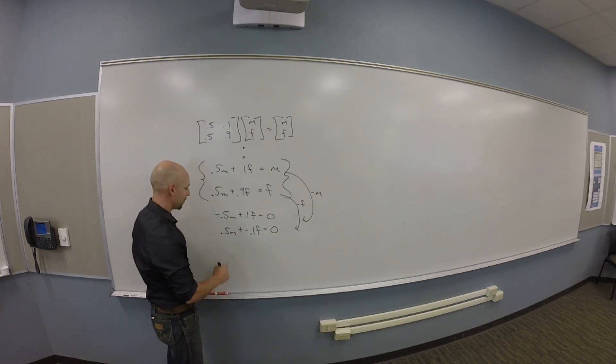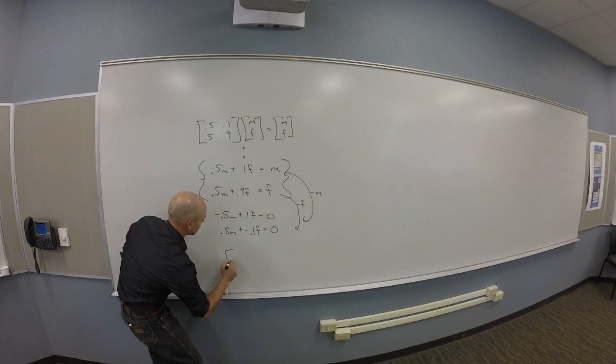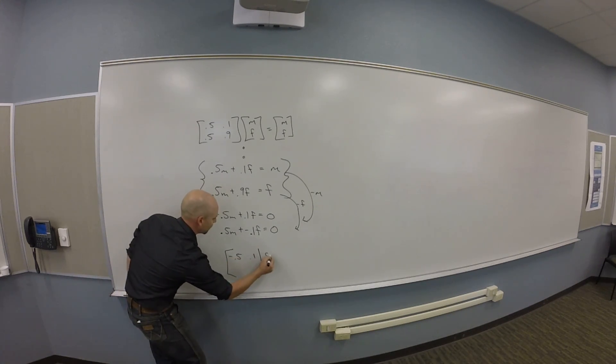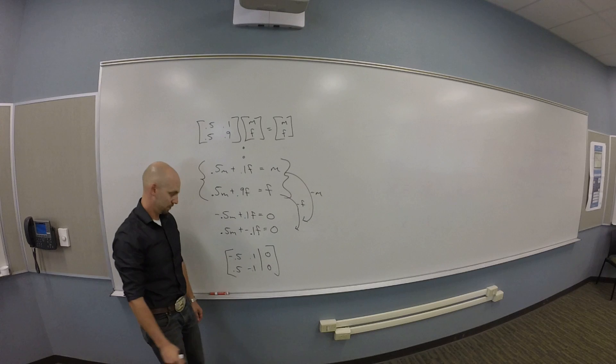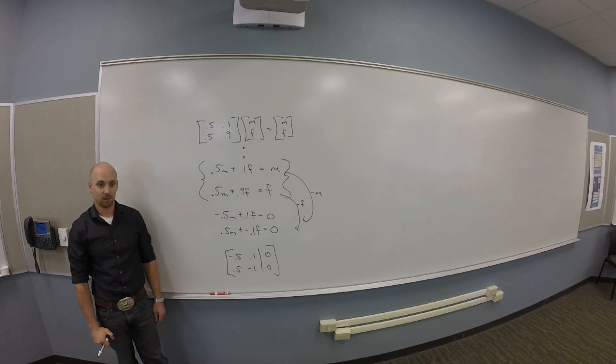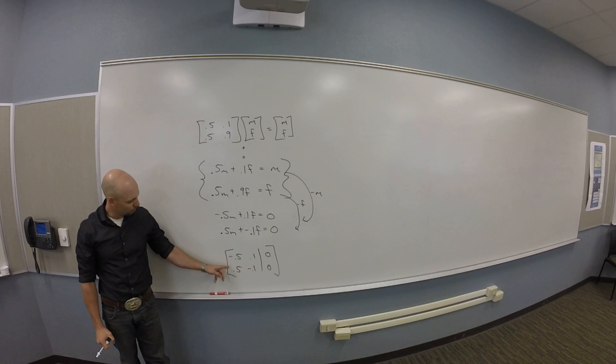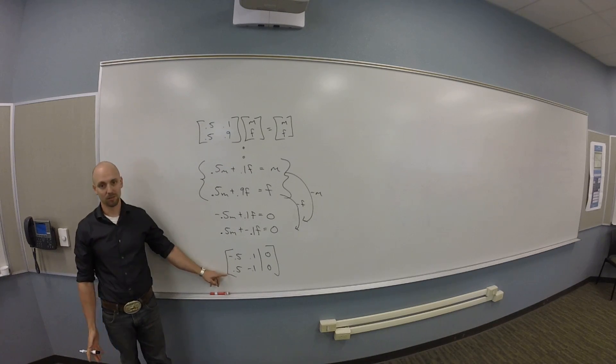And now if I build an augmented matrix out of this, this looks like minus 0.5, 0.1 augmented by 0. 0.5 minus 0.1 augmented by 0. Then if I row reduce this, I'll notice that really these are the same equation. You guys see that?